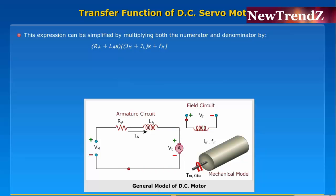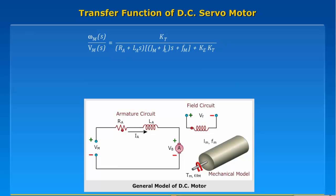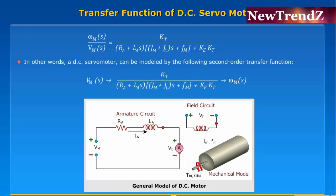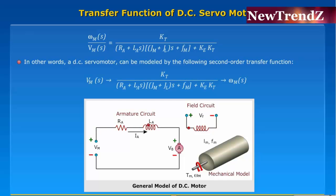Times (J_m + J_l)*s + f_m. In other words, a DC servo motor can be modeled by the following second order transfer function.